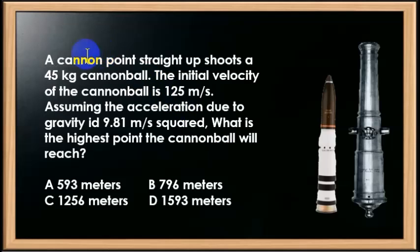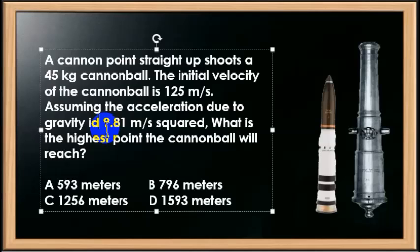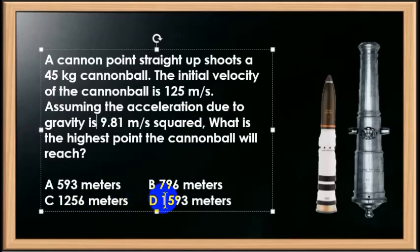Our question: a cannon points straight up and shoots a 45-kilogram cannonball. The initial velocity is 125 meters per second. Assuming the acceleration due to gravity is 9.8 meters per second squared, what is the highest point the cannonball will reach? Our answer options are: A) 593, B) 796, C) 1,256 meters, and D) 1,593 meters.